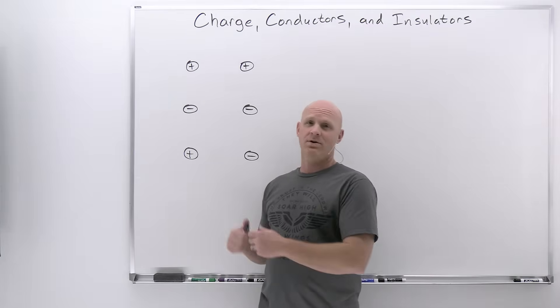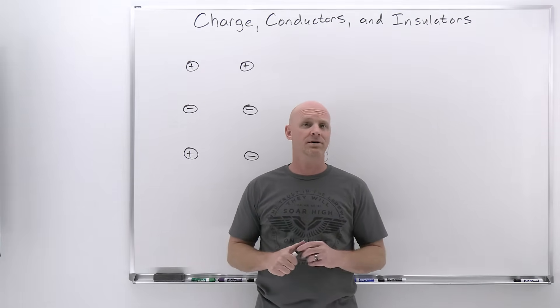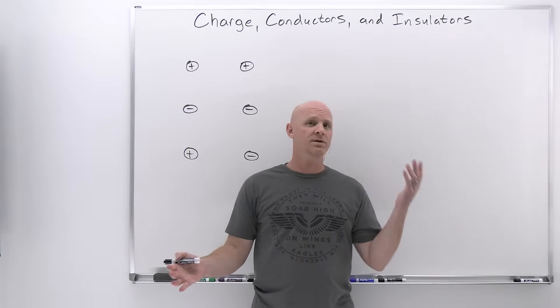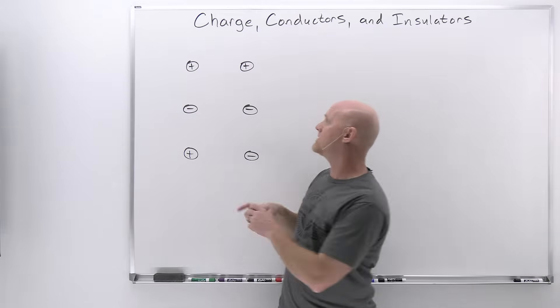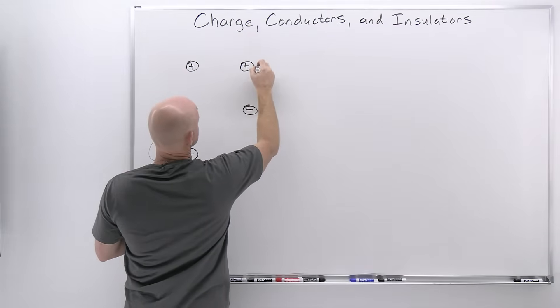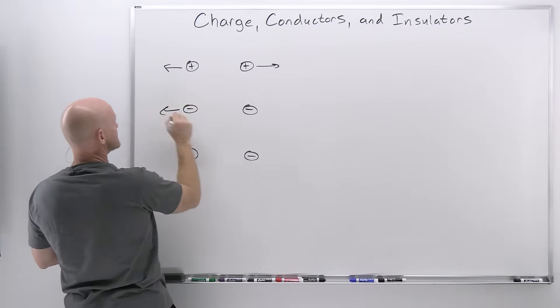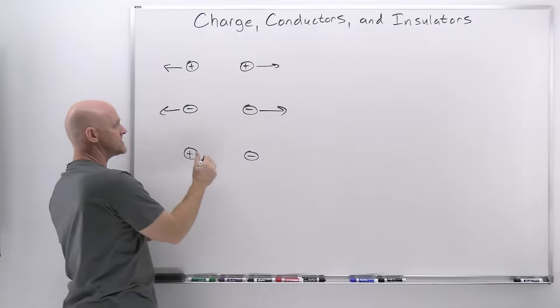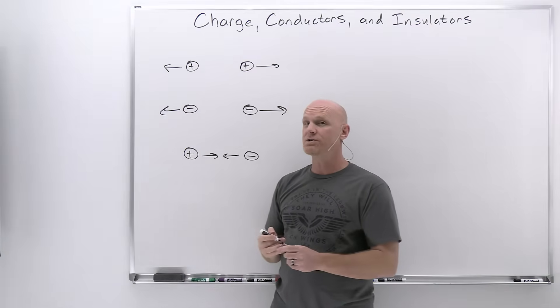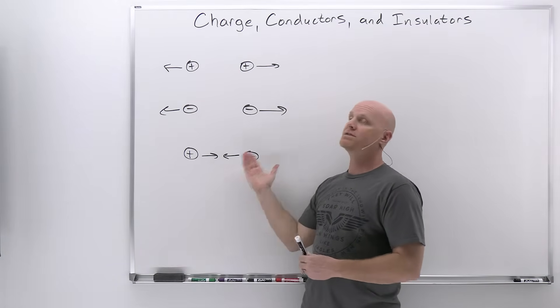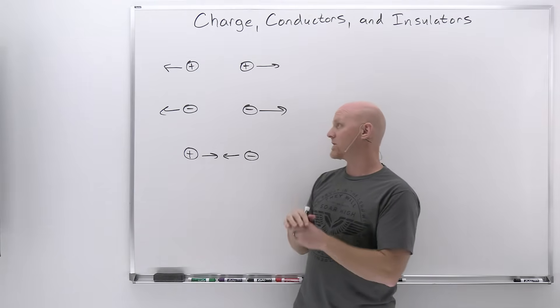It turns out there are two types of charges, and we're going to use an early convention: one's called positive, one's called negative. Like charges, either two positives or two negatives, repel each other. Opposite charges are attracted to each other. I haven't really supplied a definition of what charge is, only a description of what charges do.